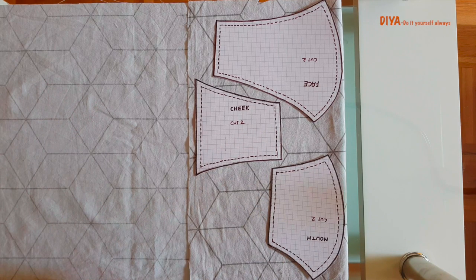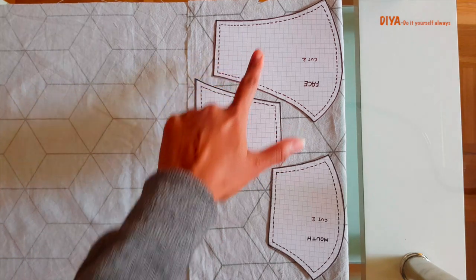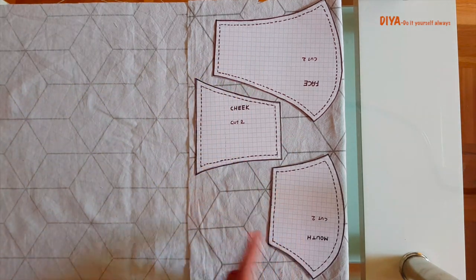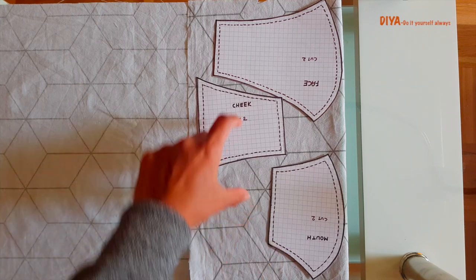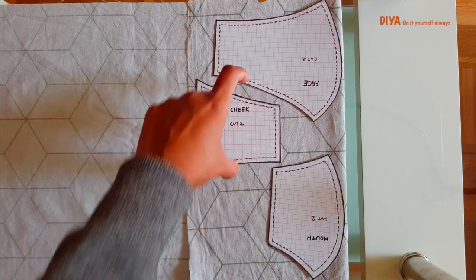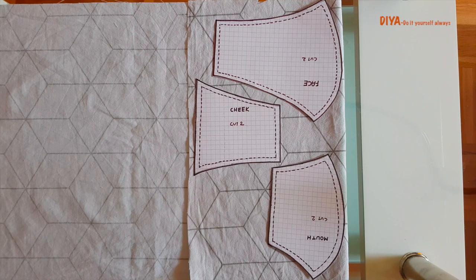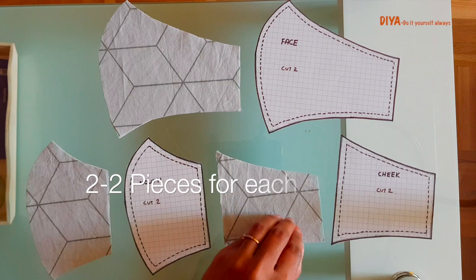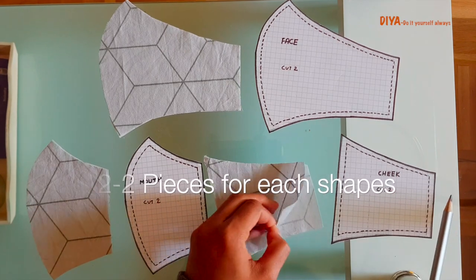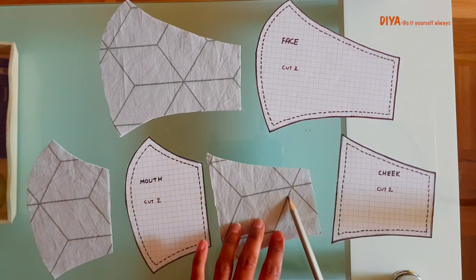Next thing is cutting the fabric. Using the same pattern, I will show you how to cut the fabric. For this, fold the fabric double and just make sure wrong side faces the wrong side of the fabric. Place these paper cuttings over the fabric like this and cut it. This way you will have these three cuttings. Just make sure that you will have two pieces for each shape.